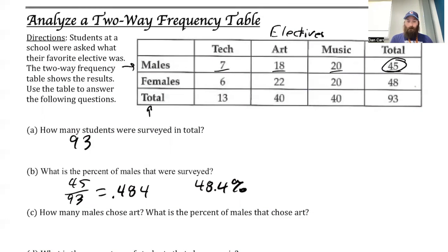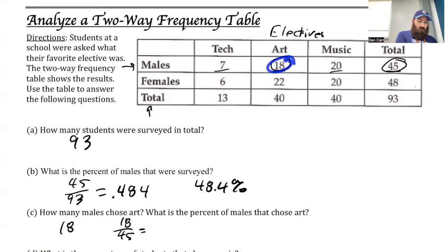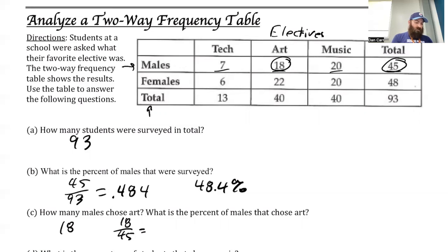How many males chose art? Males that chose art were right here — that's 18. What is the percent of males that chose art? I'm going to assume we're looking at that percent out of just the males. So we want 18 males out of the total of 45 males that were surveyed. If I wanted total population — how many males chose art out of everybody — I would do 18 divided by 93. It just depends on how we ask the question. So 18 divided by 45 gives me 0.4, which means 40% of the males chose art.